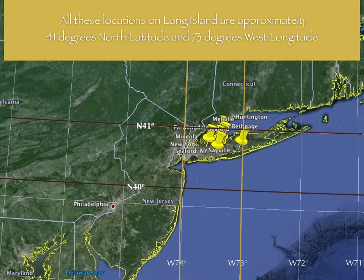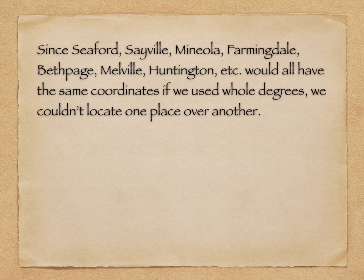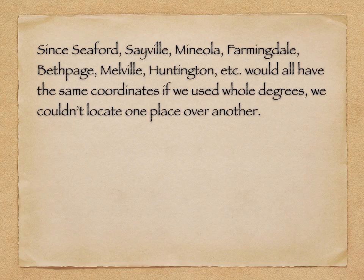Here's our example. All these locations on Long Island are approximately 41 degrees north latitude and 73 degrees west longitude. You can see between the dark red lines that all those pins, which represent the different places, fall between 40 and 41 degrees north from the equator. And all the longitudes run between the orange lines between 73 and 74 degrees west of the prime meridian. So we have a problem: since all those places — Seaford, Sayville, Mineola, Farmingdale, Bethpage, Melville, Huntington, etc. — are in that same general area, if we just use the whole degrees, they're going to all have the same coordinates. So we can't distinguish one place from another, since they have the same values.